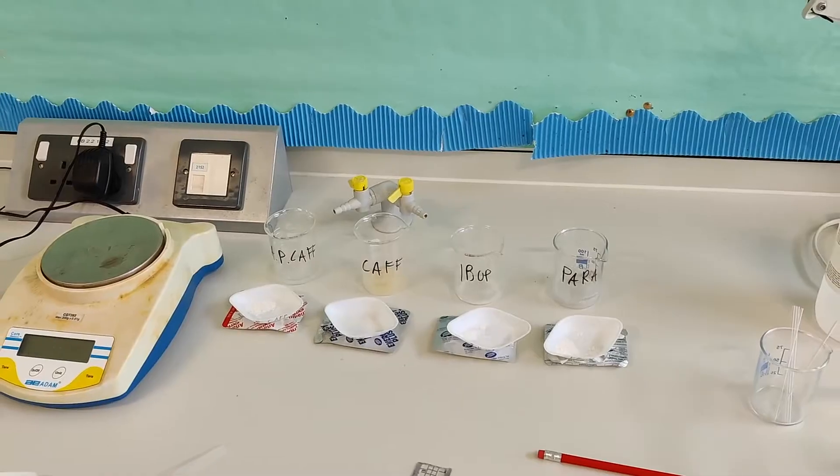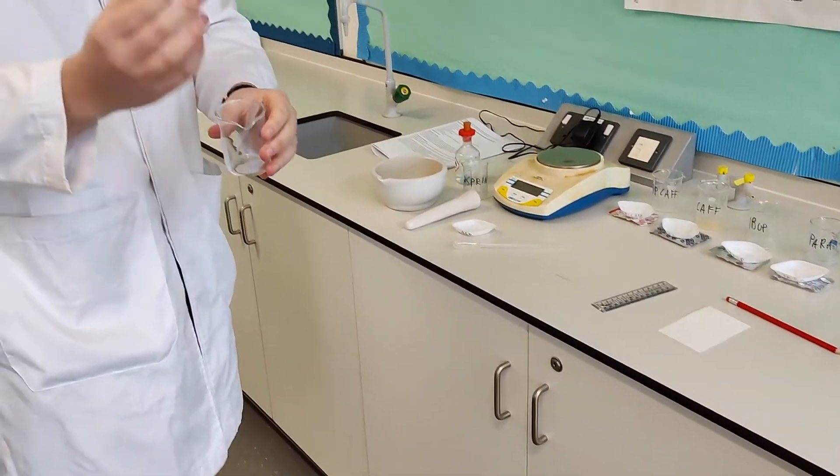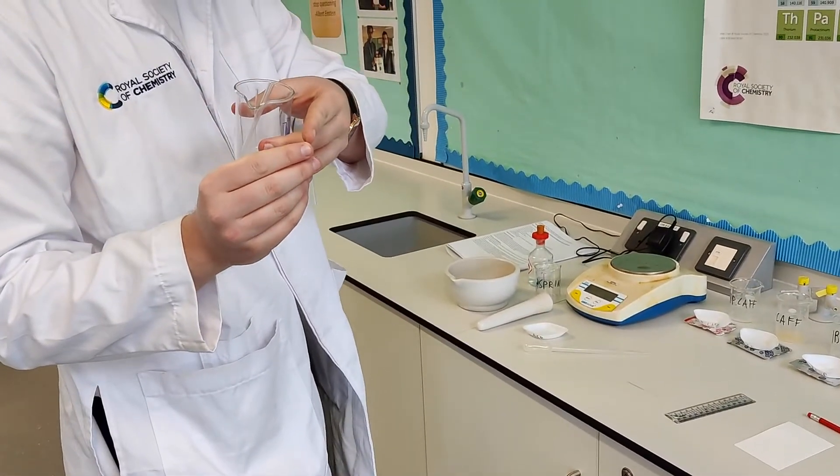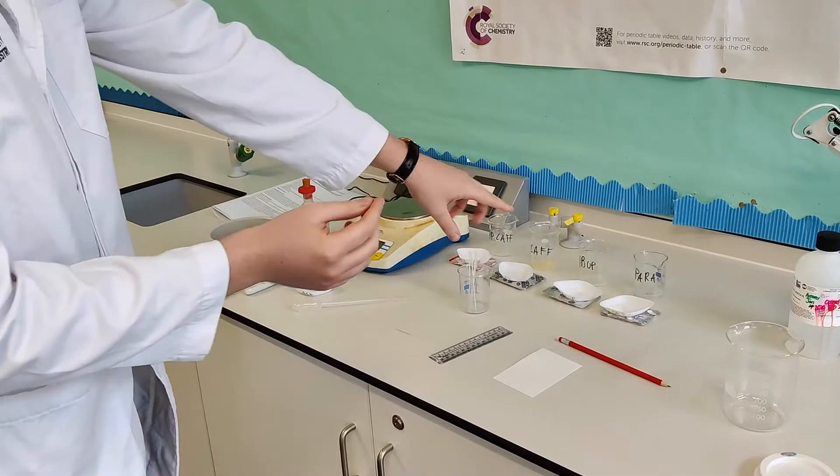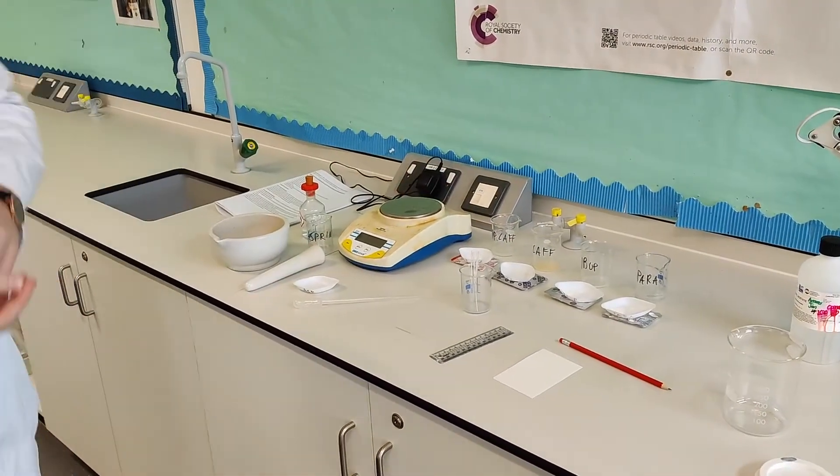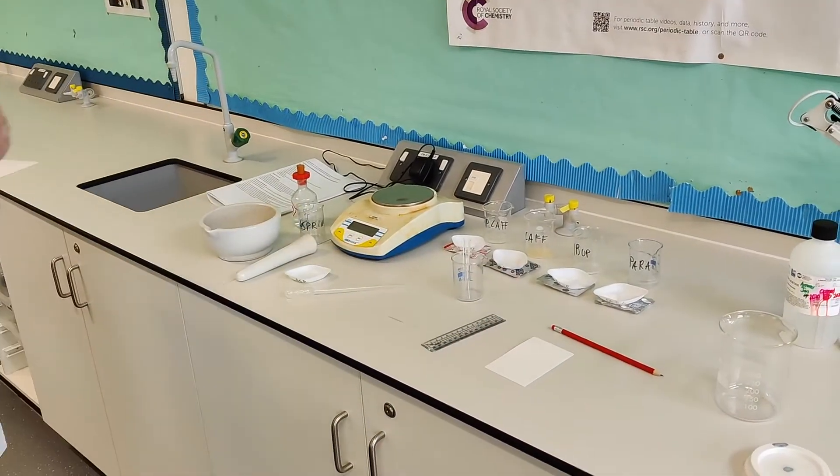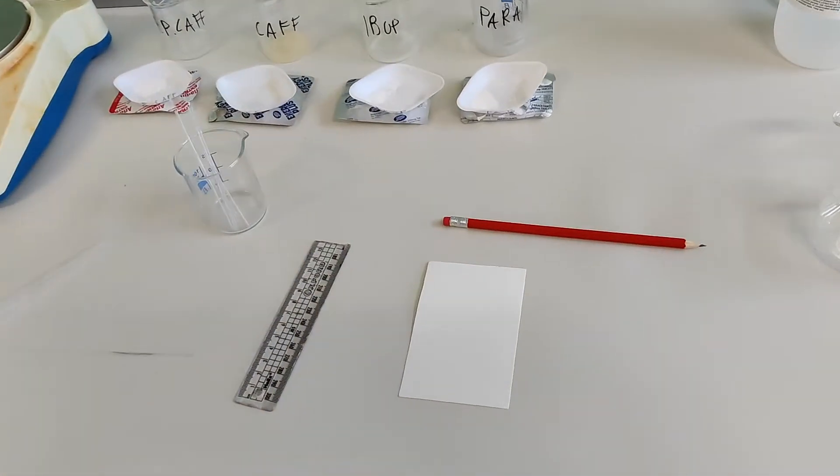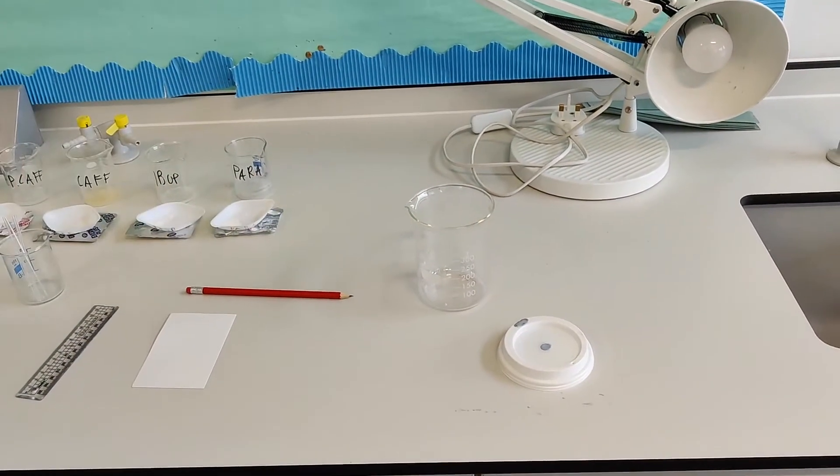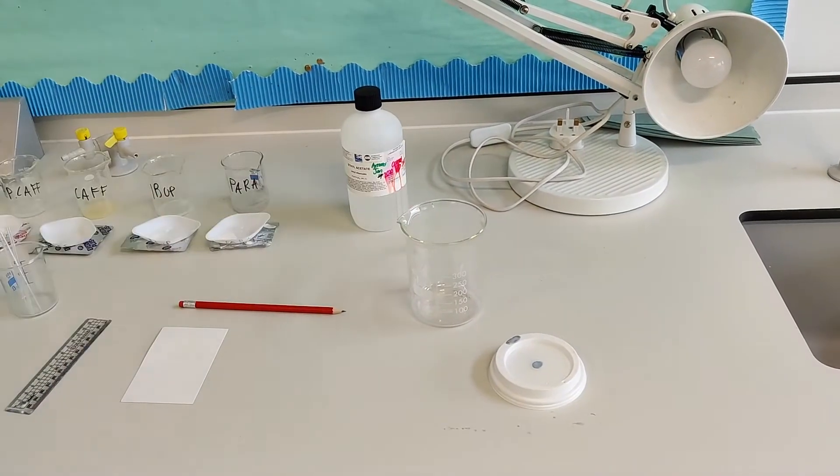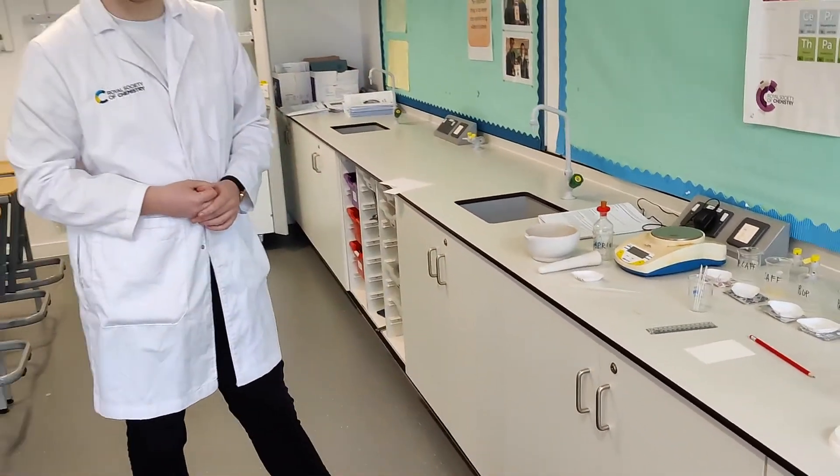And then what do we do once we've prepared all our samples? So once we've prepared them all, we're going to get a capillary tube. Remember these capillary tubes are very, very thin and fine with a small opening at the bottom. We'll be dipping this capillary tube into the solution, and some of the solution will be drawn up the capillary tube by capillary action, and then we'll be spotting a small dot onto the TLC plate, and we'll be placing all of our spots on the TLC plate, and place it in the beaker with a solution of ethyl acetate as a solvent, and we shall see a nice separation of different compounds in each of the different drugs.